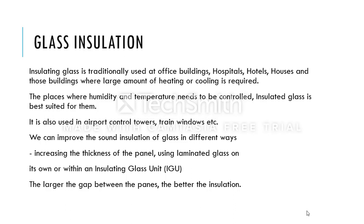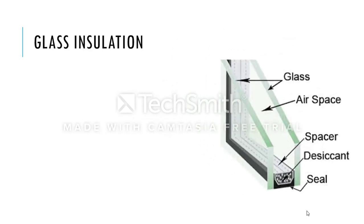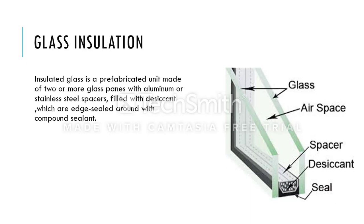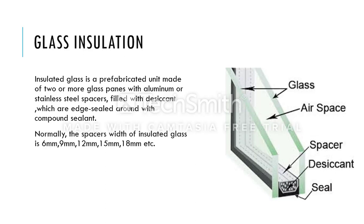A larger gap between panes provides better insulation. The two glass panes are spaced apart by a distance known as the air space, created by spacers located below which contain desiccant, and below that a sill is provided. Insulated glass is a prefabricated unit made of two or more glass panes with aluminium or stainless steel spacers filled with desiccant, sealed with a compound sealant. Normally the spacer width of insulated glass is 6 mm, 9 mm, 12 mm, 15 mm, 18 mm, and so on.